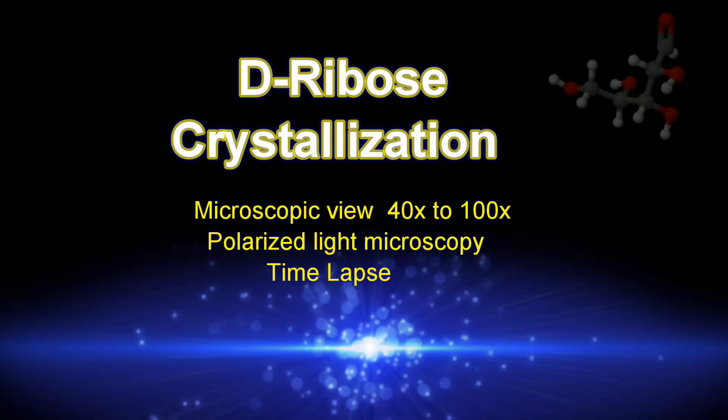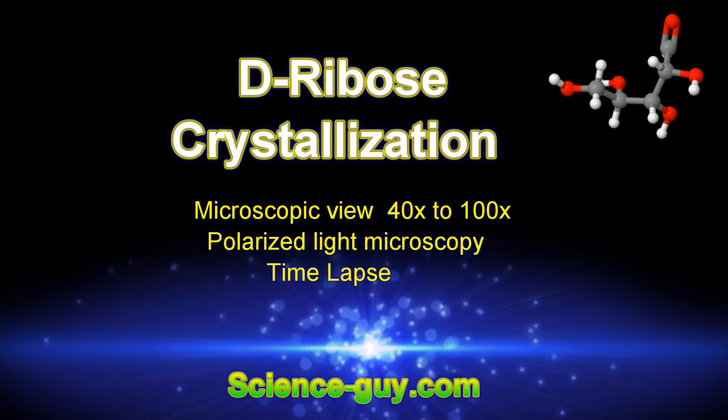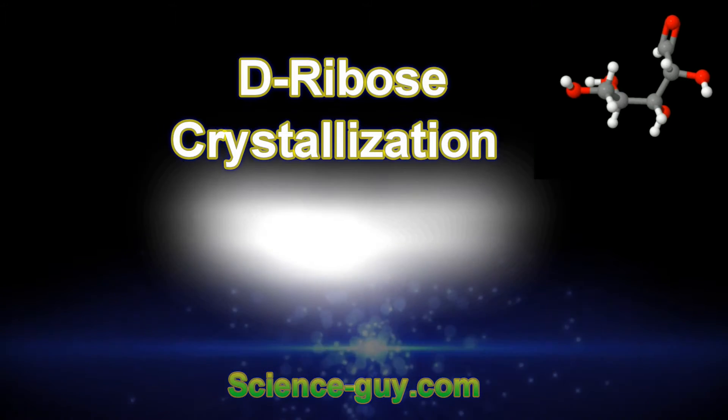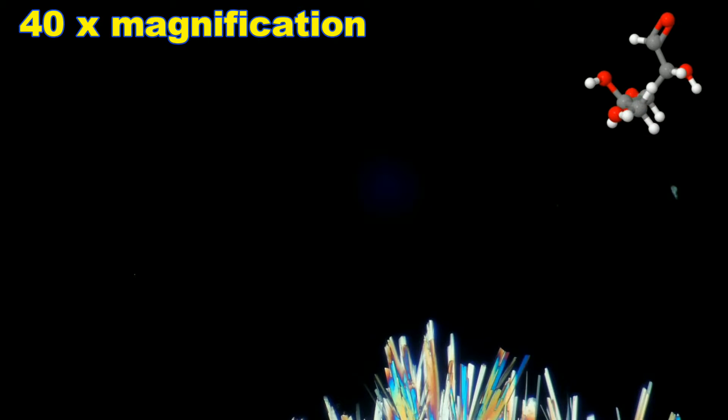This video is of the sugar D-ribose, an important biological sugar that makes up the backbone of the structure of RNA. It's very similar to deoxyribose that is found in DNA.